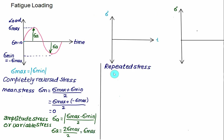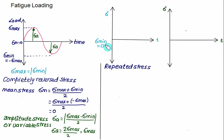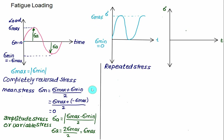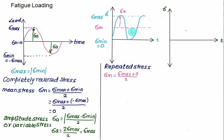The second type is repeated stress, where minimum stress is zero. Stress increases from zero to sigma_max and returns to zero repeatedly. In this case sigma_mean = (sigma_max + 0)/2 = sigma_max/2, and sigma_amplitude = sigma_max/2 as well. The stress varies from zero to a certain maximum value without changing nature — this is called repeated stress.